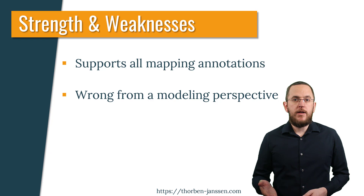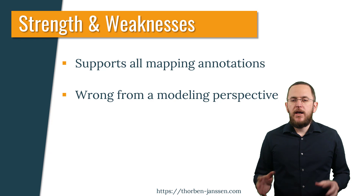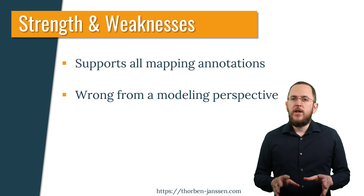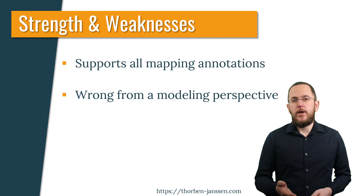As you saw in the previous example, the MappedSuperclass mapping provides a very natural approach to define the mapping of shared attributes. It supports all mapping annotations, and you can even model attributes with specific semantics — for example, primary keys and version attributes — on your superclass. As you will see in the next section, that's not the case if you are using an embeddable.